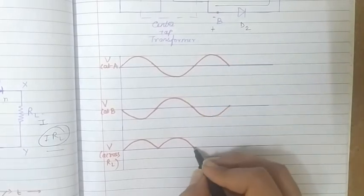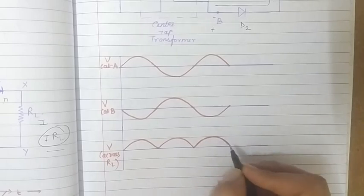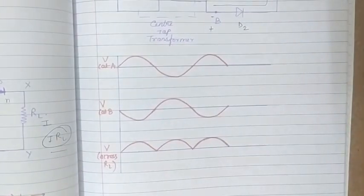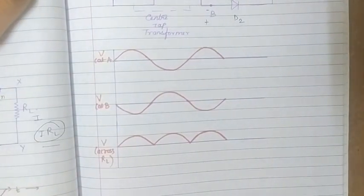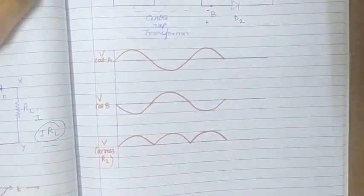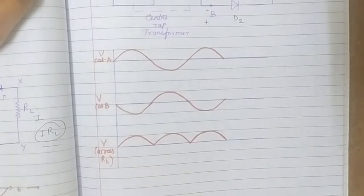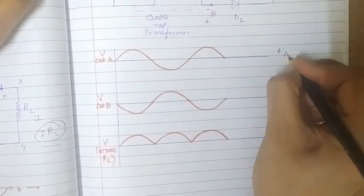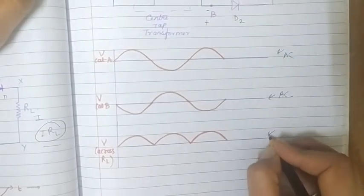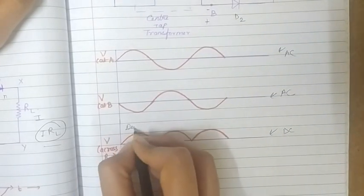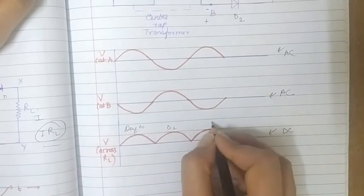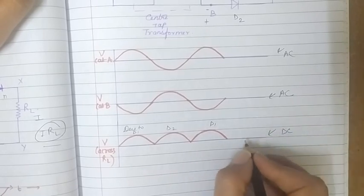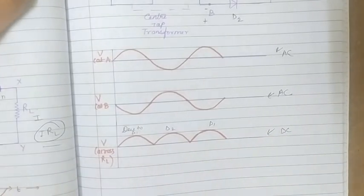During the positive half cycle at A and negative half cycle at B, diode D2 is reverse biased and D1 conducts because D1 is forward biased. What we conclude is: the whole wave applied to the transformer gives us current in the same phase. Once we get current from D1, next we get current from D2, but the phase of the output voltage remains the same throughout.